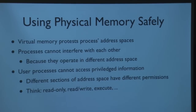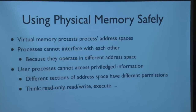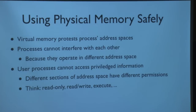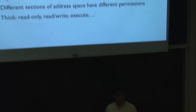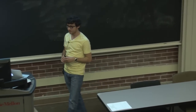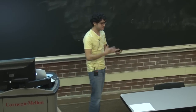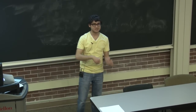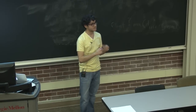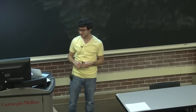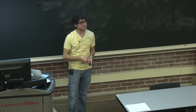How do we use physical memory safely? We can protect processes' address spaces from one another, making sure processes don't interfere — they can't read or write somebody else's data because they operate in different address spaces. User processes can't access privileged information like passwords stored in OS-protected memory. It's kind of like file permissions but in terms of memory: some processes can read, some can read and write, some can execute data from a memory location.